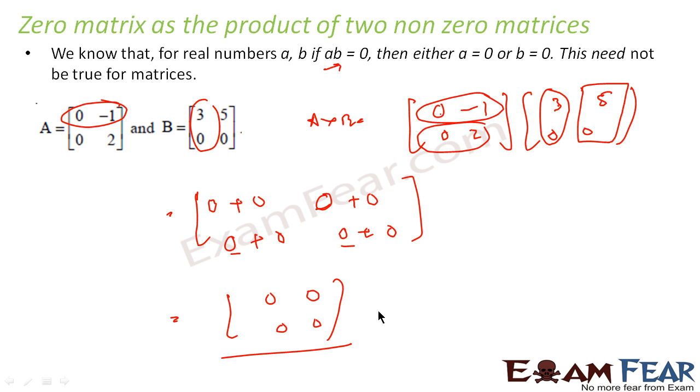So we got a zero matrix as product of two non-zero matrices. Please note, it is possible the product of two non-zero matrices can be zero. So having understood multiplications and we have solved so many questions of multiplication, let's just understand some properties of multiplications.